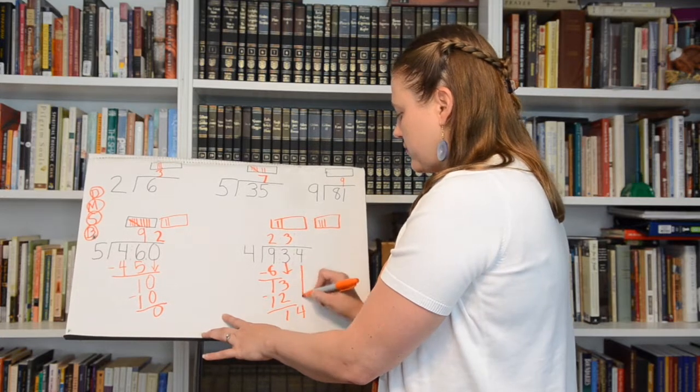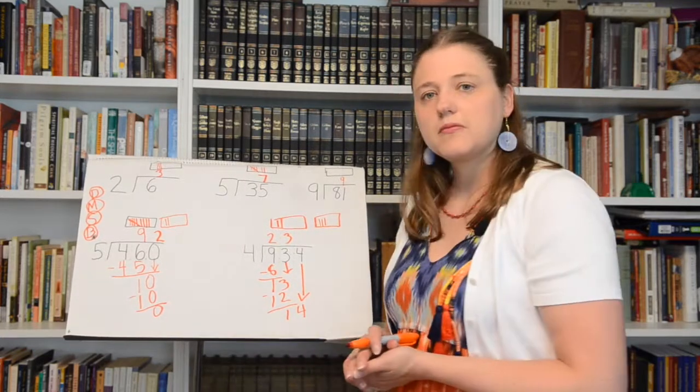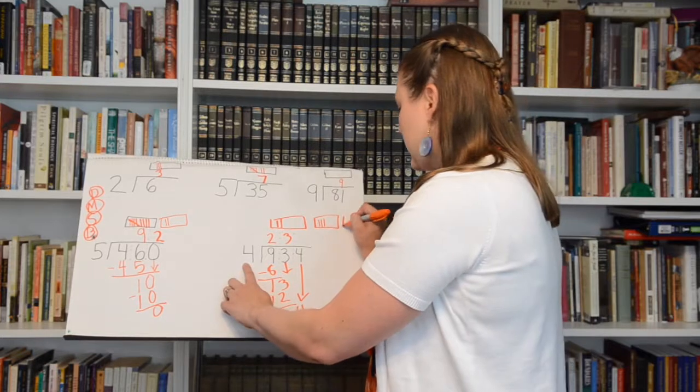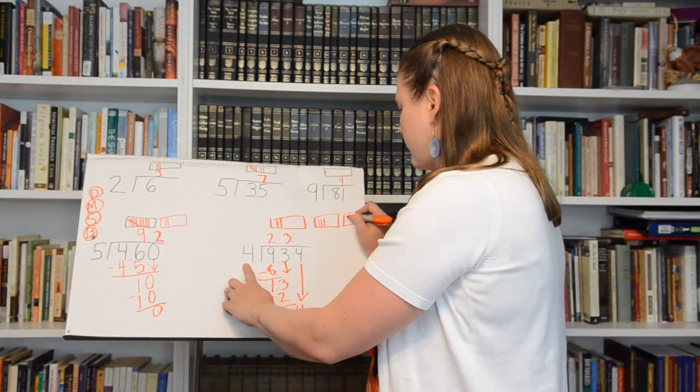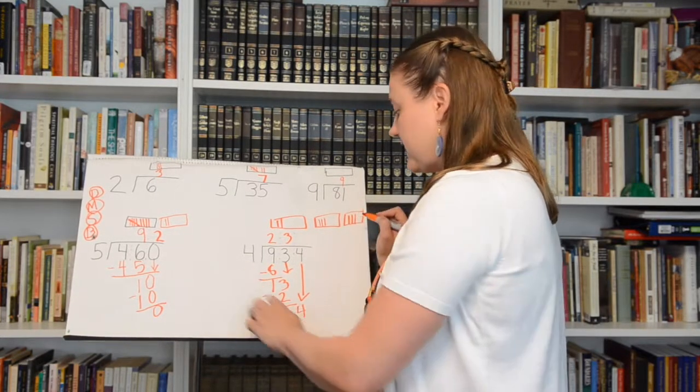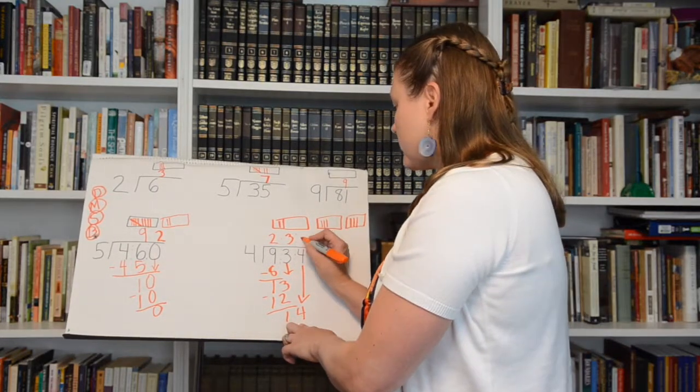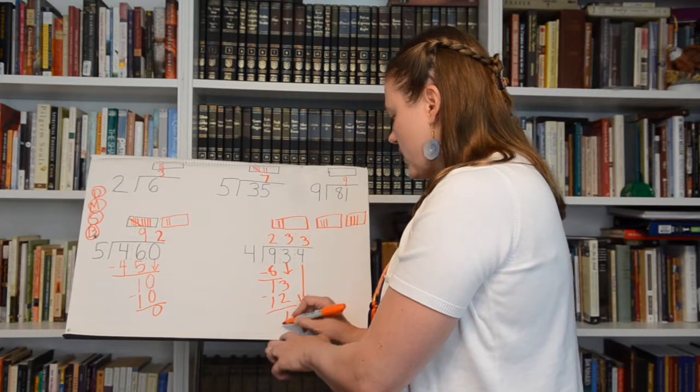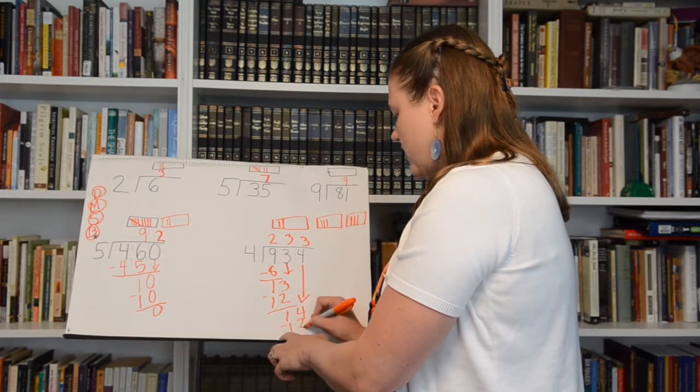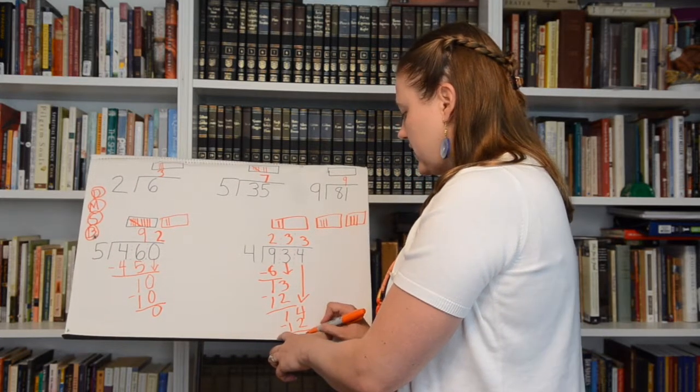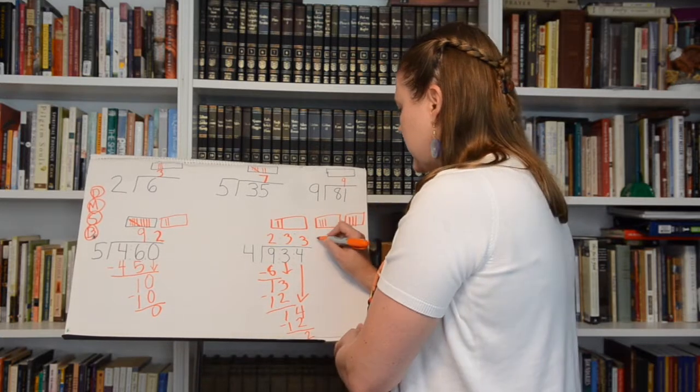Then we're going to say four, eight, twelve, and the next number would be sixteen which is too high. So we're going to say three. Three times four, we write twelve. We subtract and we get a remainder two.